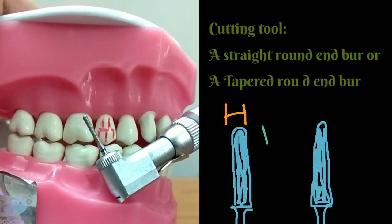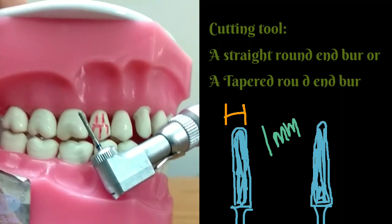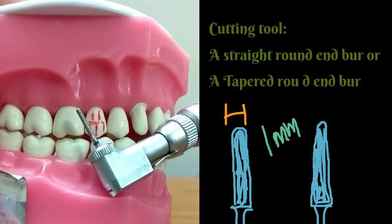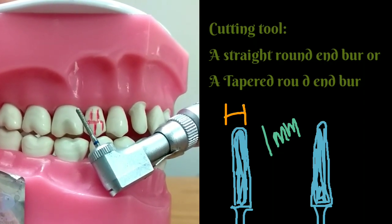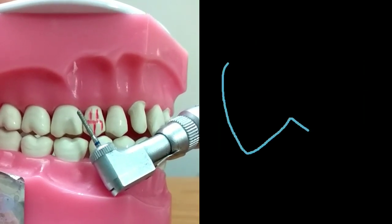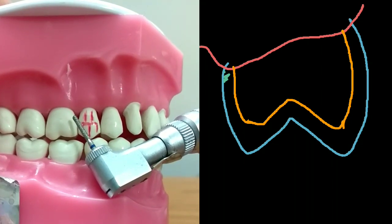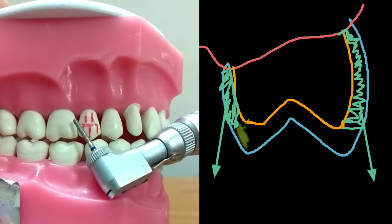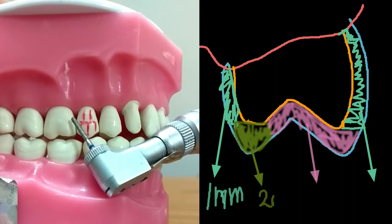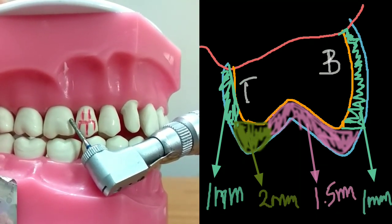For this preparation I am going to use a straight round-ended cylinder about one millimeter in diameter, so my depth orientation grooves will be one millimeter in depth everywhere. I will reduce the tooth all around to about one millimeter, except for the occlusal surface which will require about 1.5 millimeters of reduction on average.